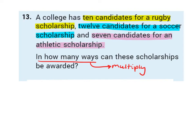Question 13. A college has 10 candidates for a rugby scholarship, 12 candidates for a soccer scholarship, and 7 candidates for an athletic scholarship. In how many ways can these scholarships be awarded?